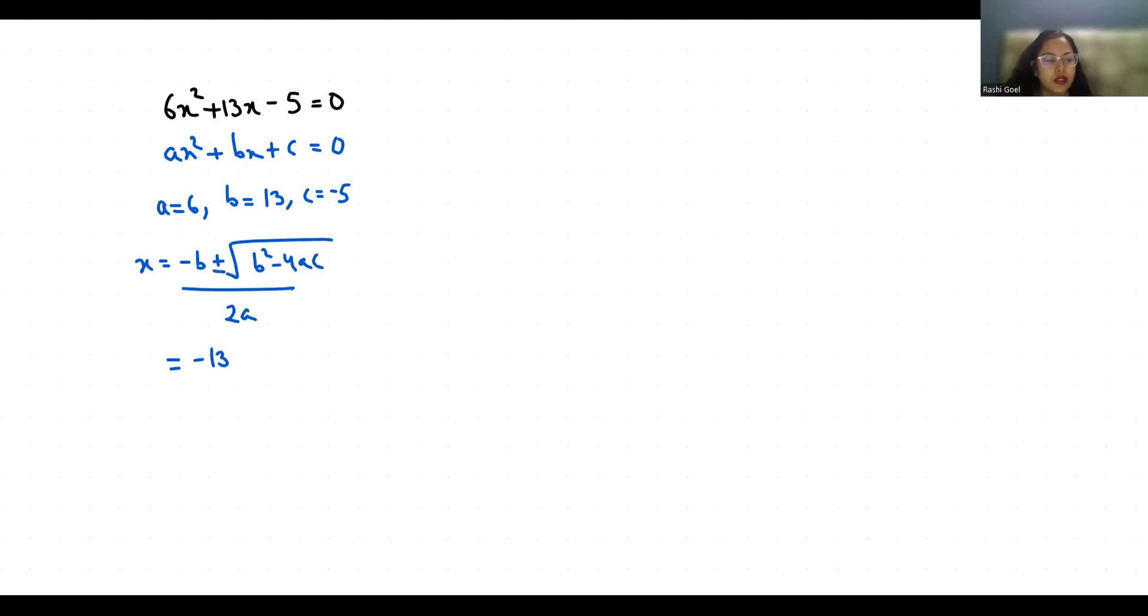So minus 13 plus minus under root 13 square minus 4 times 6 times minus 5 by 2 times 6. Minus 13 plus minus under root 13 square is 169. 4 times 5 is 20, 20 times 6 is 120. Minus minus is plus by 12.